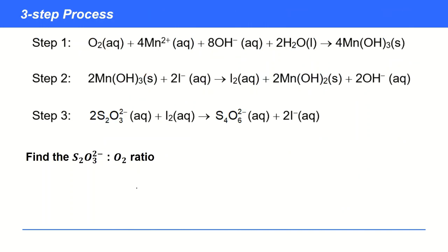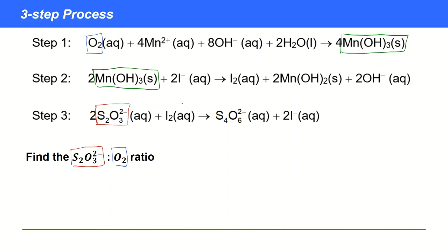Here's a third example — pause the video and try it. This is now a three-step process. We're trying to find the thiosulfate to oxygen ratio. Oxygen occurs in the first equation, and thiosulfate in the third — they are separated by a whole other equation, so we're going to need two linked species. Looking at the first step, manganese hydroxide is formed and it's also found in the second step, so that's one linked species. Then the product of the second reaction used in the third is, again, iodine.